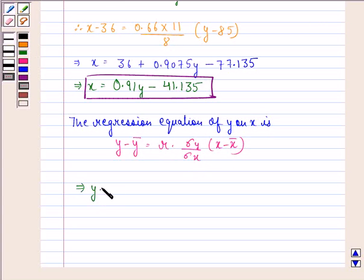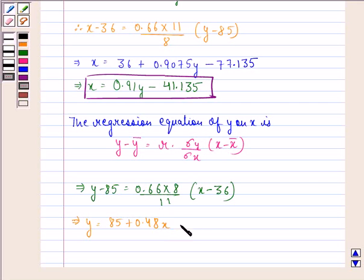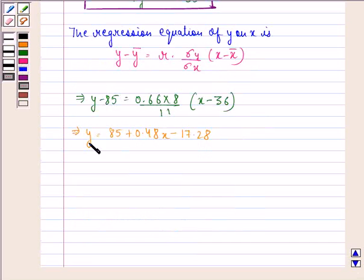This implies that y minus 85 is equal to 0.66 into 8 divided by 11 multiplied by x minus 36. This implies that y is equal to 85 plus 0.48x minus 17.28. This implies that y is equal to 0.48x plus 67.72. This is our answer to the second part.